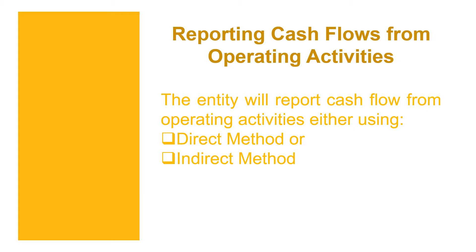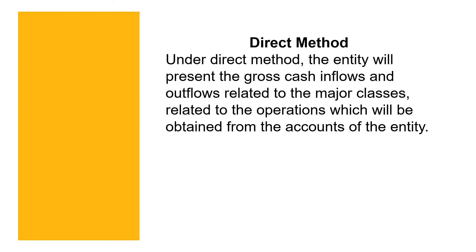Reporting cash flows from operating activities — the direct method. Under the direct method, the entity presents the gross cash inflows and outflows related to the major classes related to operations, obtained from the accounts of the entity. Under the direct method, we can trace exactly where cash inflows came from and where cash outflows went — for example, cash sales from customers are shown as a major class.